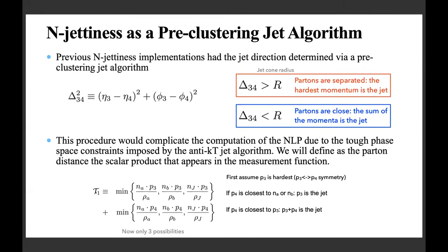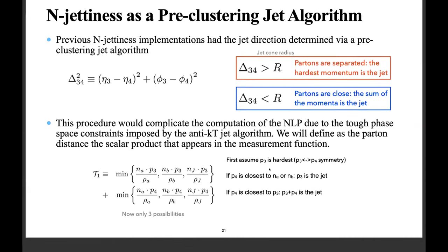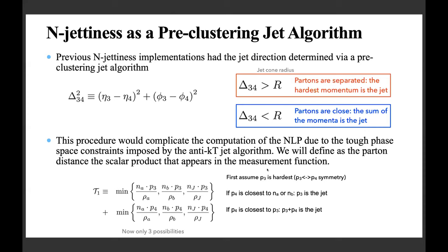Using N-jettiness as the pre-clustering algorithm simplifies the one-jettiness definition significantly. Assuming p_3 is the hardest radiation, we examine the position of p_4 in phase space. If p_4 is closest to n_a or n_b, the minimum contribution is zero from that direction since p_3 becomes the jet. If p_4 is closest to p_3, the jet momentum becomes p_3 + p_4, and you get contributions from n_J · p_3/J and n_J · p_4/J. This reduces the problem to only three cases instead of the original nine.